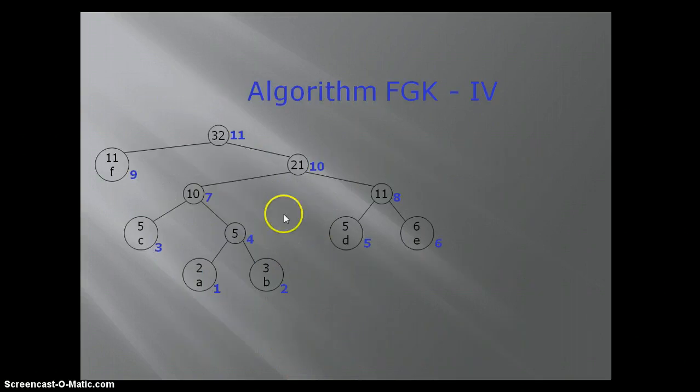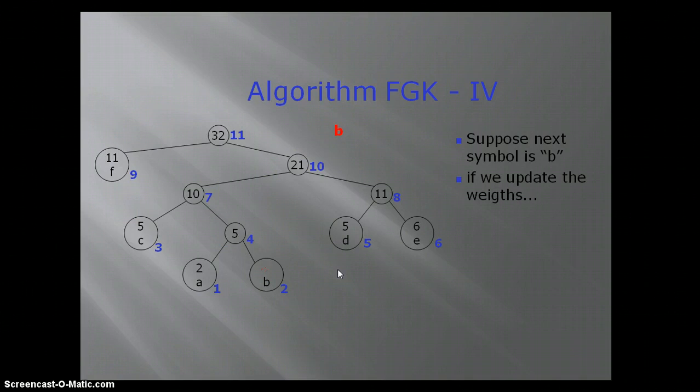Suppose this is a basic tree and we want to update B. When we update B, number 4 will be updated here, number 7 will be updated here, number 22 will be updated here, and number 11, 33 will be updated here. But the sibling property here, 6 is greater than 5, it is violated.